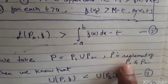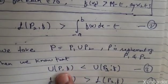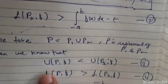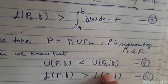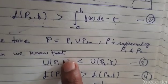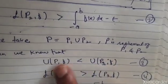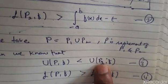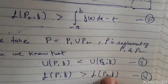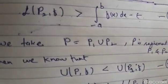We know that if P is a refinement of P1 and P2, then the refinement value of U(P, f) is always less than or equal to U(P1, f), and the refinement value of L(P, f) is always greater than or equal to L(P2, f). So by the refinement theorem, U(P, f) is always less than or equal to U(P1, f), and L(P, f) is always greater than or equal to L(P2, f).